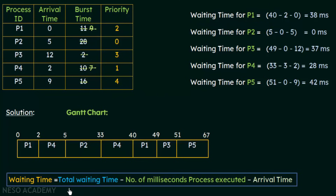For P2, the last occurrence is at 5ms — that is when P2 got the CPU. P2 did not execute before this, so previous execution is 0. P2's arrival time is 5. So waiting time for P2 = 5 − 0 − 5 = 0 milliseconds. P2 arrived and was immediately given the CPU since it had the highest priority and was never preempted.